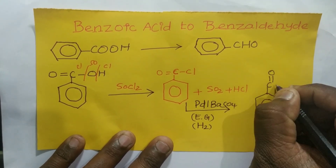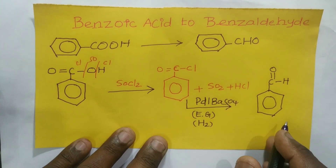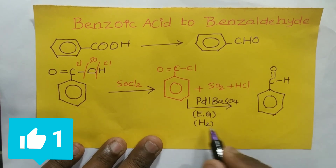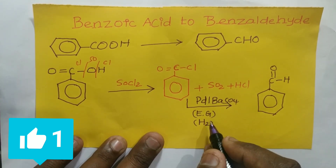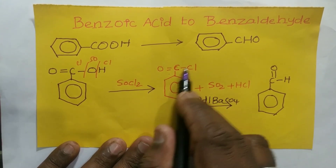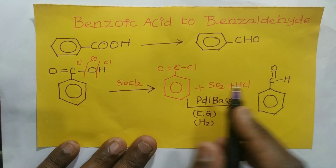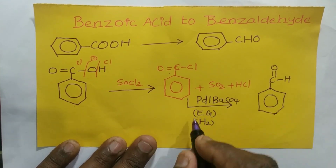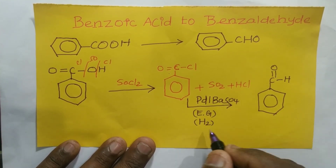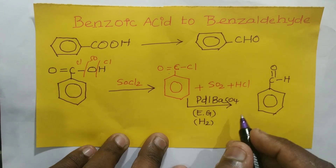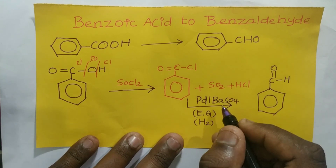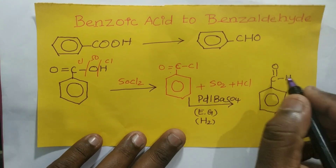From this reaction I get benzaldehyde — C double bond O with one H — as my product. This is nothing but Rosenmund reduction, where COCl is converted into CHO. In this reaction, palladium with barium sulfate, H₂, and ethylene glycol or xylene as a high boiling solvent are used.